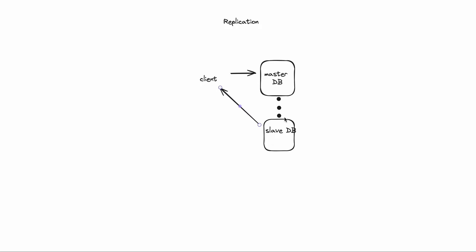The reads and writes are now separated. We separate them so that we can scale more reads. This improves the scalability of the database. We have also improved availability — if the master machine fails, a slave DB can take over the reads. So this is replication in a distributed database: we copy the data set from one machine to other machines for high availability and scalability, and the client can read the data from the slave machines.